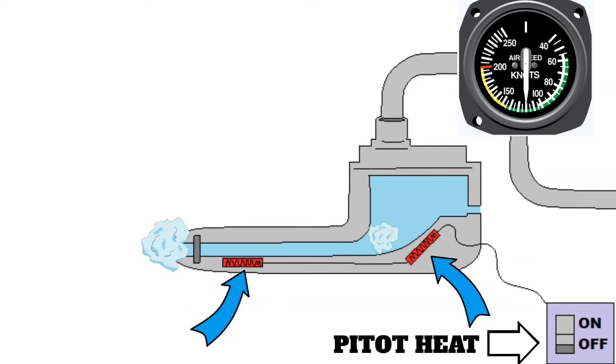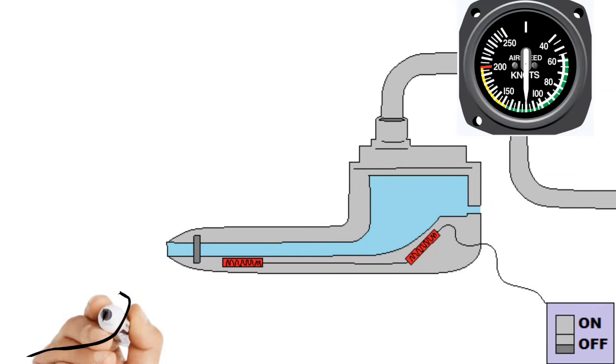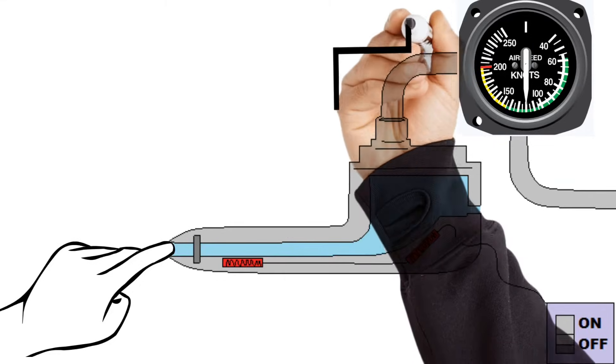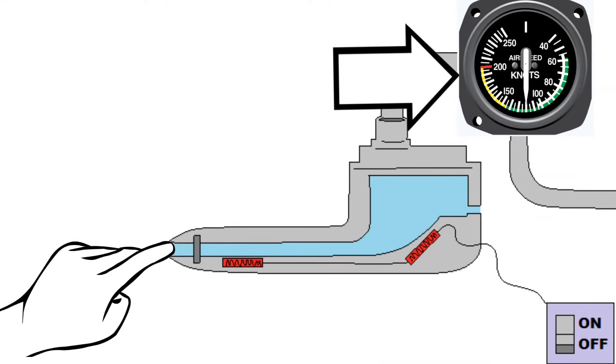So what happens if these things get clogged? Well, if the pitot tube gets clogged, the only instrument that's going to be affected is your airspeed indicator. And if you remember, that's because this is the only instrument that uses dynamic air pressure to give us a reading.